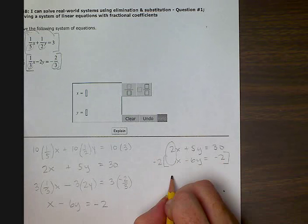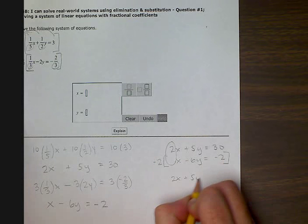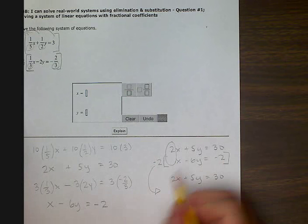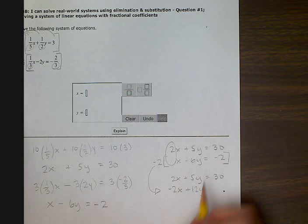So I'm just rewriting the top line. Two x plus five y equals thirty. And then after I multiply, I'm putting this right here. Negative two x plus twelve y. That is negative two times negative six to give me a positive twelve. Equals negative two times negative two, a positive four.